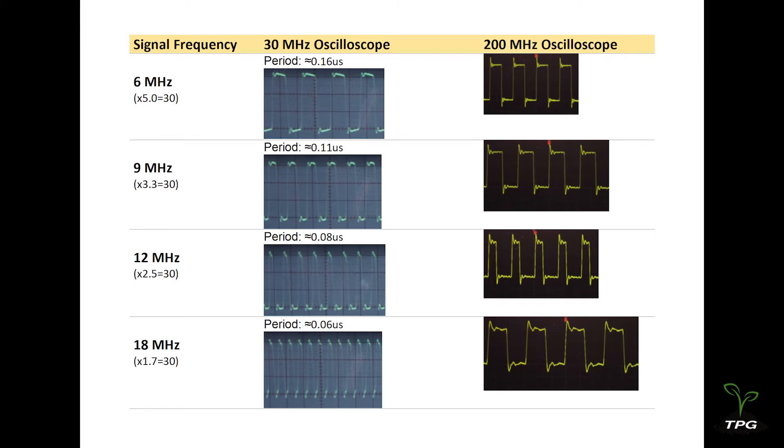In general, to accurately measure an AC waveform, the oscilloscope must have a bandwidth that exceeds the frequency components of the waveform. The bandwidth limitation of an oscilloscope can affect the waveform of the input signal. As the frequency of the test signal increases, the limited bandwidth gradually distorts the waveform.